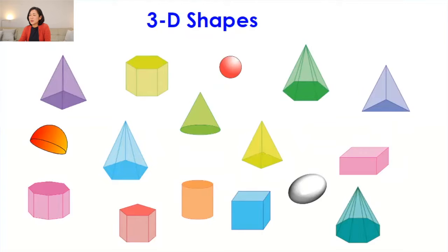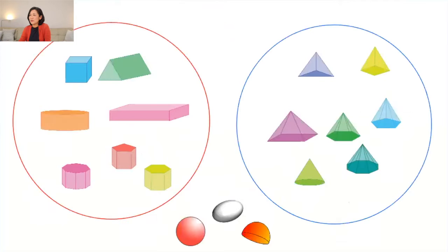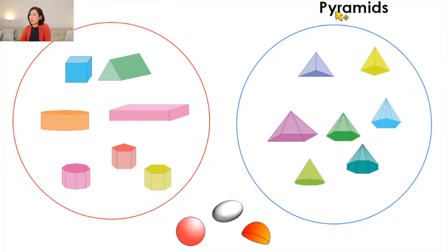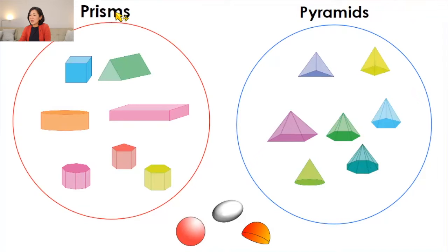We are going to group these shapes into two groups. One group has a pointed top, and the other group has a top and bottom. The first group is called a pyramid and the second group is a prism.